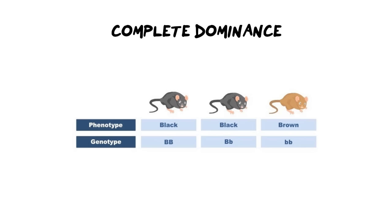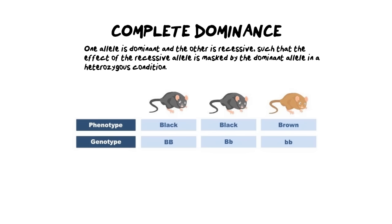The first type of dominance we are going to look at is complete dominance. This particular type was originally coined by Mendel. When we define complete dominance, we say that one allele is dominant over the other recessive allele, such that the effect of the recessive allele is masked by the dominant allele in a heterozygous condition.